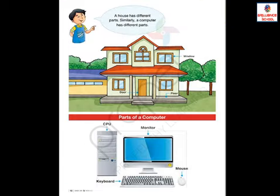Now turn to the next page, page number 16. Tell me what you can see on this page. At the top there is a picture of a house, and the second picture is a computer. A house has different different parts — door, window, floor, stairs, wall.